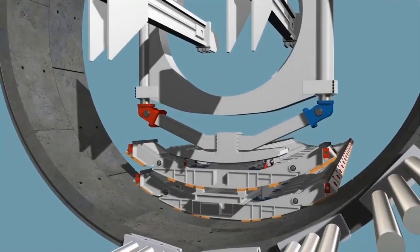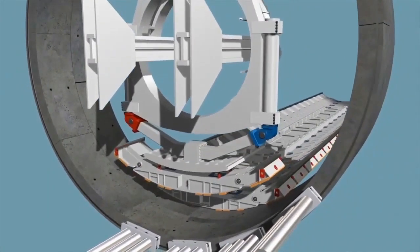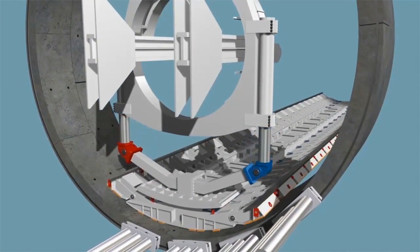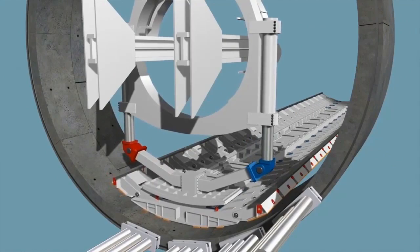which is a retractable module, is put in place in the lower section of the last previously installed ring. It serves as a foundation for the gantry, which can now follow.